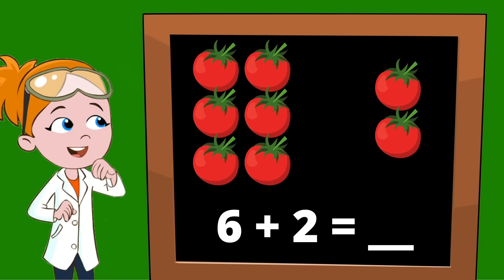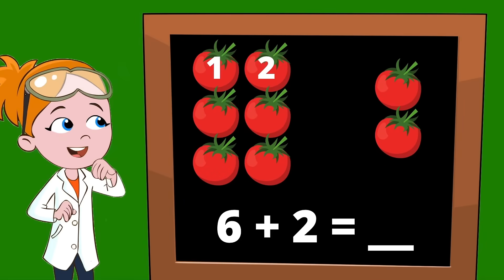Let's count the tomatoes. One, two, three, four, five, six, seven, eight. Sally has eight tomatoes. So that means six plus two equals eight.